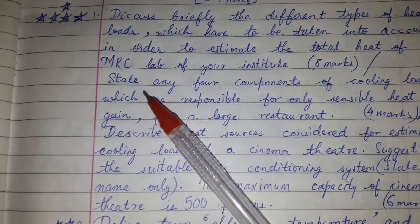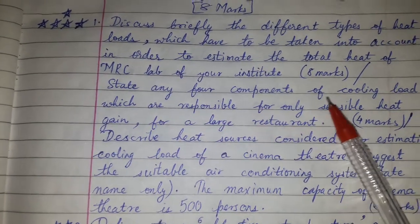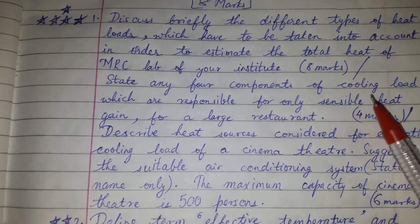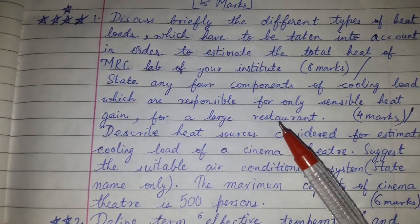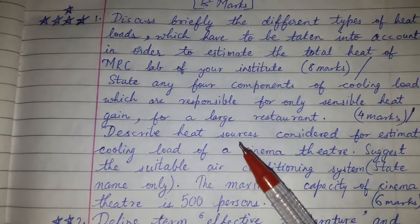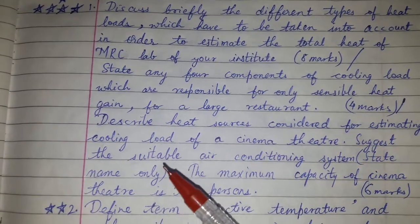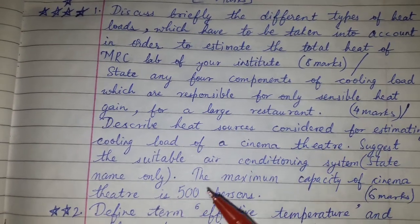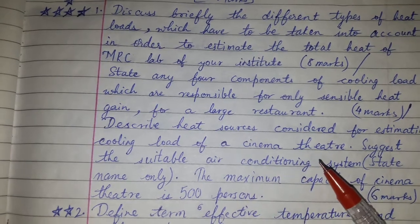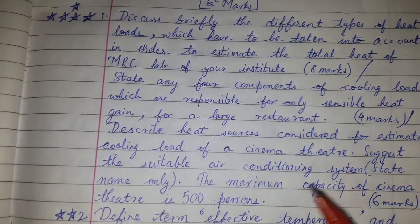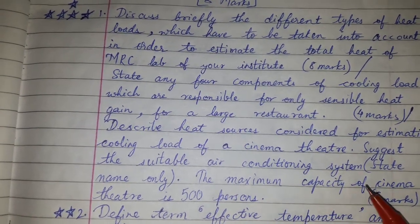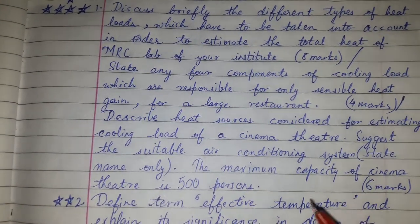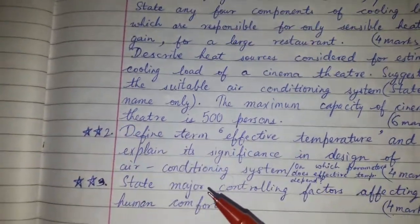State any four components of cooling load which are responsible for only sensible heat gain for a large restaurant. Describe heat sources considered for estimating cooling load of a cinema theater and suggest a suitable air conditioning system. State the name and maximum capacity of the cinema theater, which is five hundred persons. This has come for six marks.